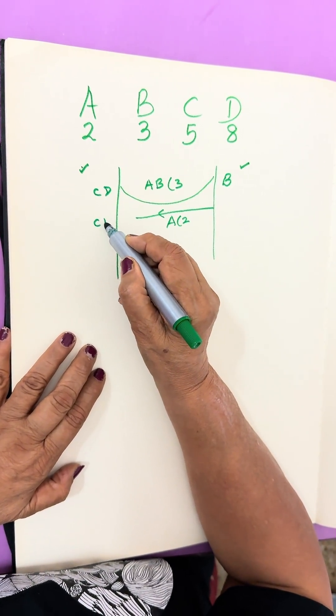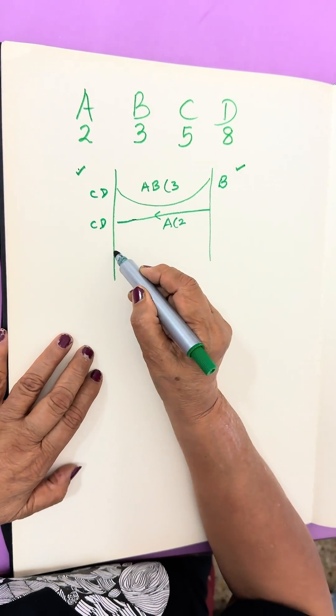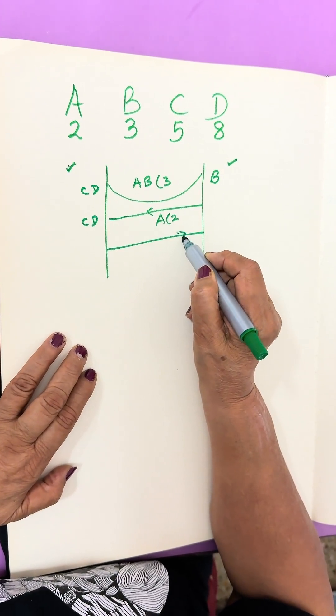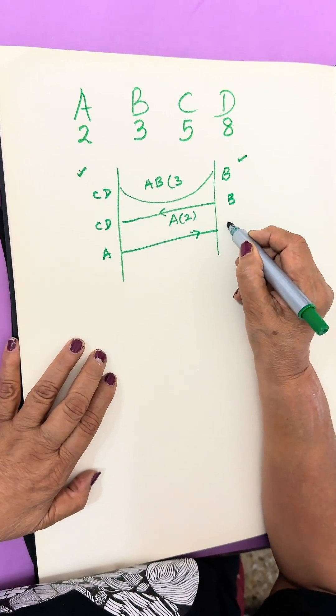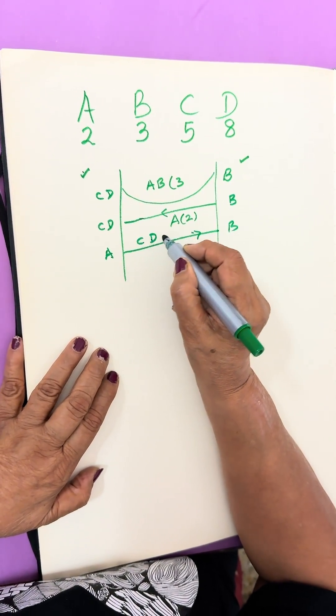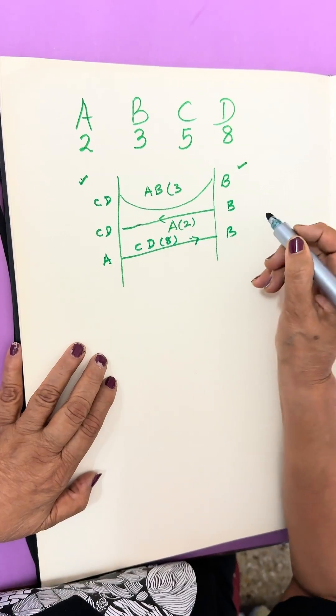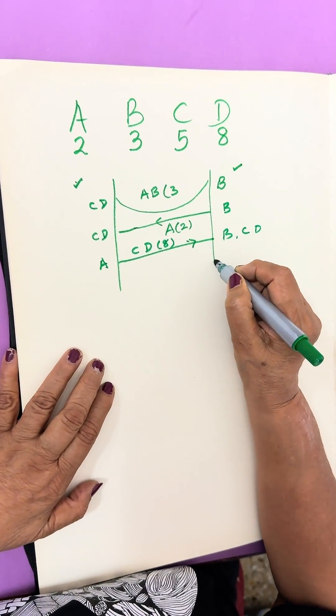Now C and D will cross the bridge. A is here, B is here. So C and D will go and they will take 8 minutes. C and D have reached here.